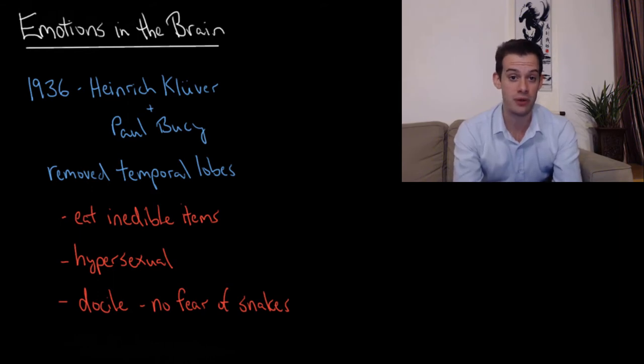Kluver and Busey removed the temporal lobes of rhesus monkeys and when they did this, they found that the monkeys showed a certain pattern of symptoms. One of these symptoms was that they would attempt to eat inedible items. They would put just about anything in their mouths. This is called hyperphagia.